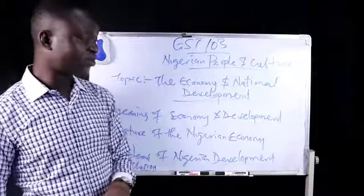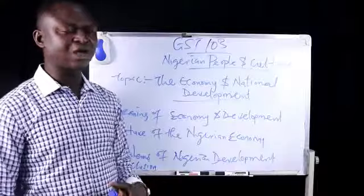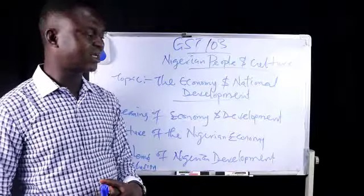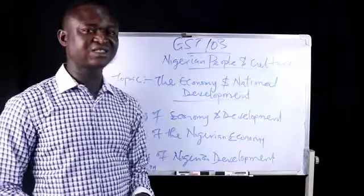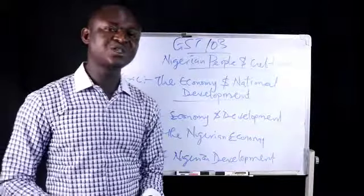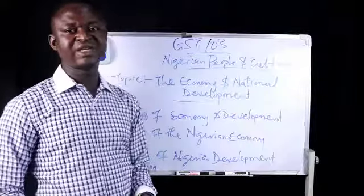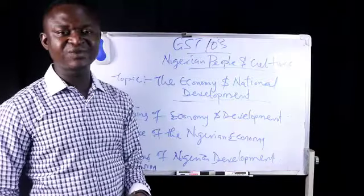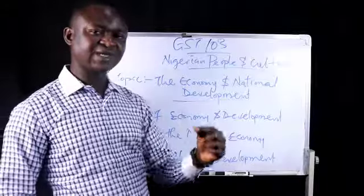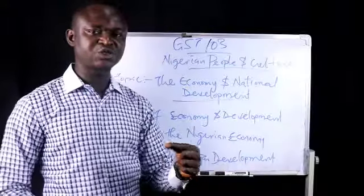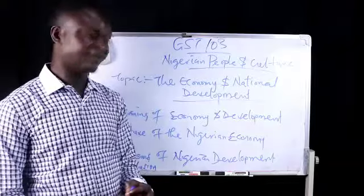After the Clifford constitution, Nigeria had another constitution in her history, called the Richard constitution of 1946. From the Richard constitution of 1946, we had another constitution in 1951, the Macpherson constitution. Then, after the Macpherson constitution, we had the Lyttleton constitution of 1954.